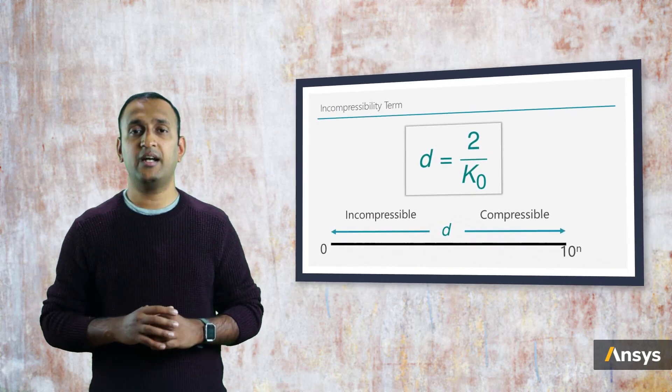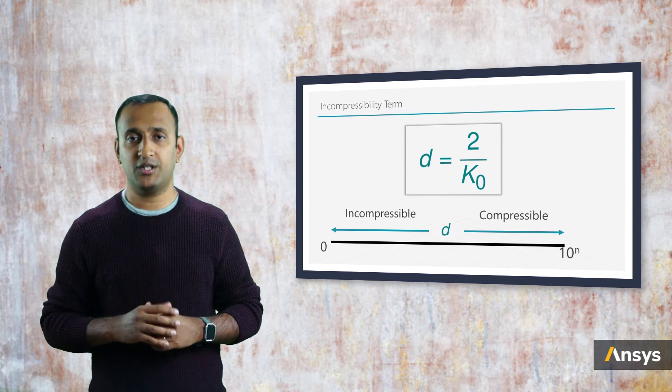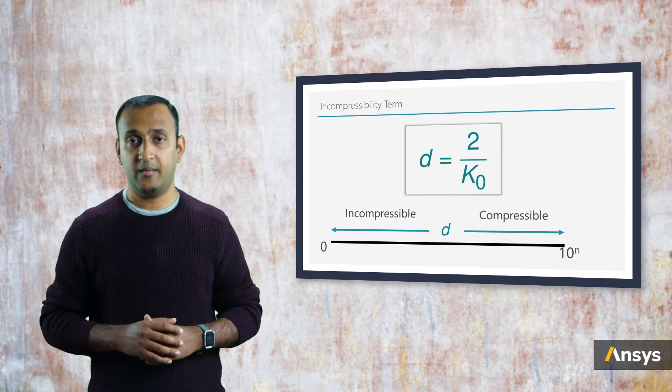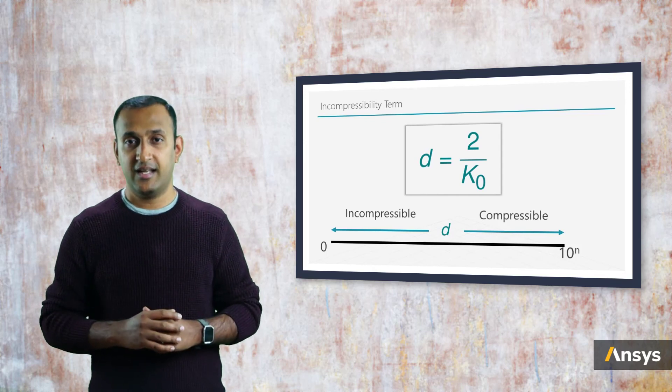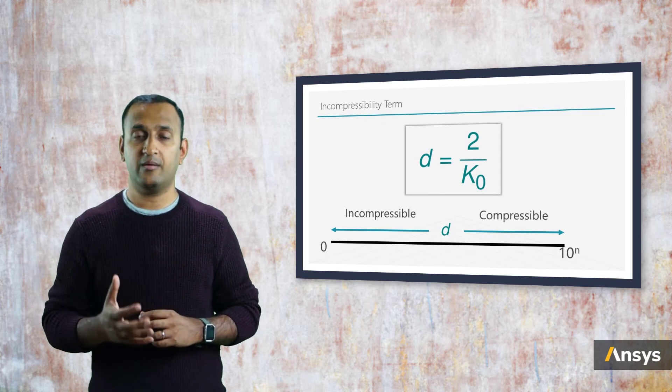Before we conclude this lesson, let's have a short discussion on the incompressibility term. In case of incompressible forms, proper usage of the incompressibility term is very important. This term is related to the initial bulk modulus of the material, and based on this definition, as the value of d decreases, the material tends to be more incompressible.